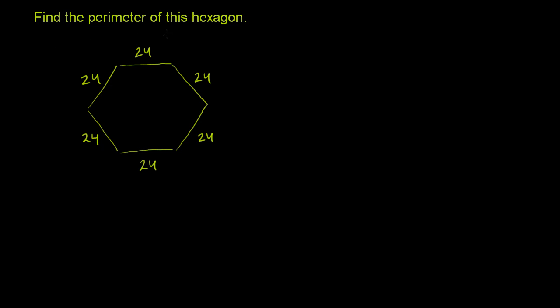Find the perimeter of this hexagon. So the perimeter just means the distance around the object, or if you add up all of the lengths of the sides of the object. We're going to add up all the lengths of sides of this hexagon. And a hexagon is just a six-sided geometrical shape like this.